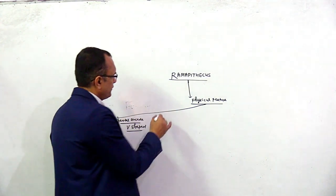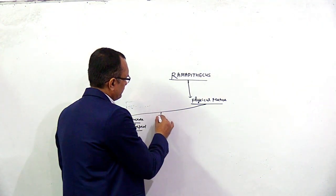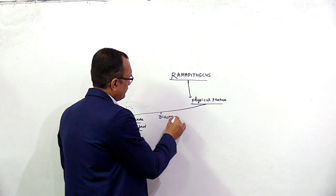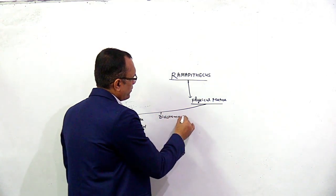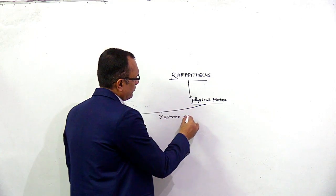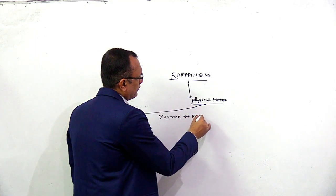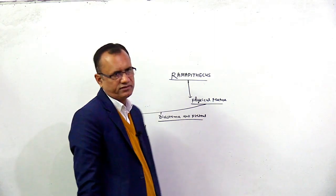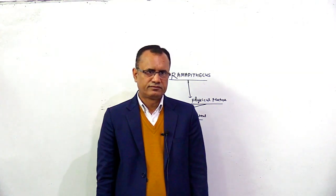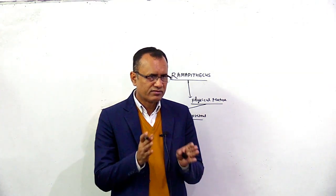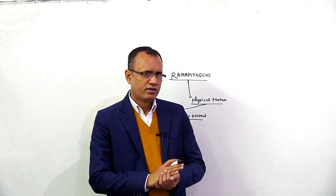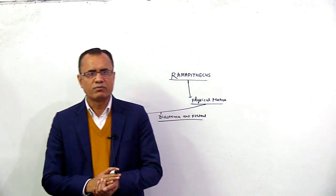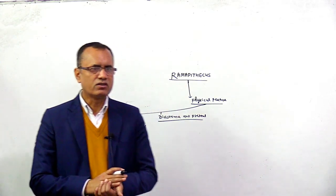Second, diastema was not present. Diastema was not present. Diastema is a feature of apes, and that is not present in Ramapithecus, meaning that is a feature of humans.